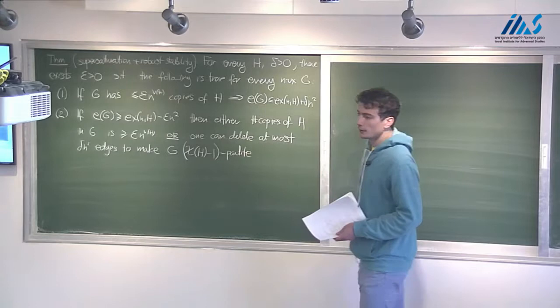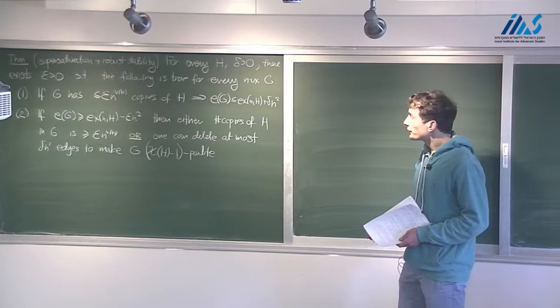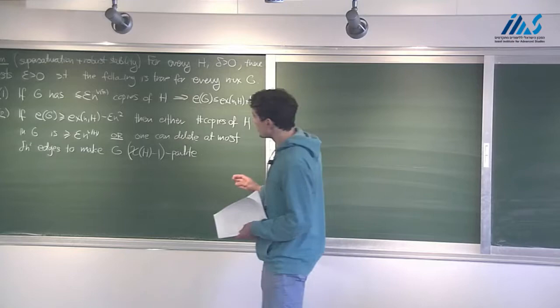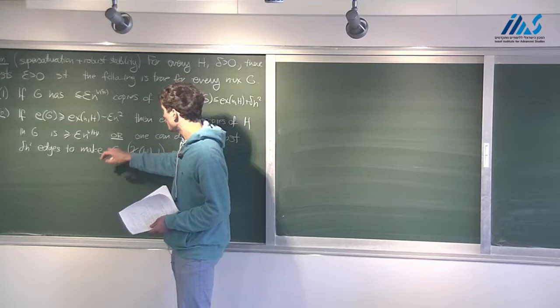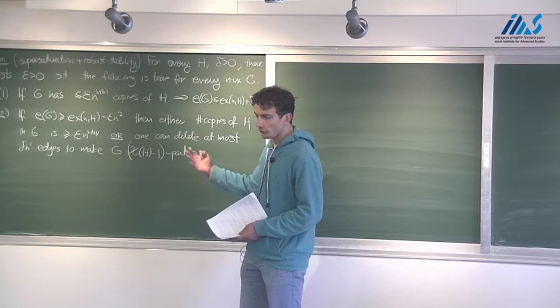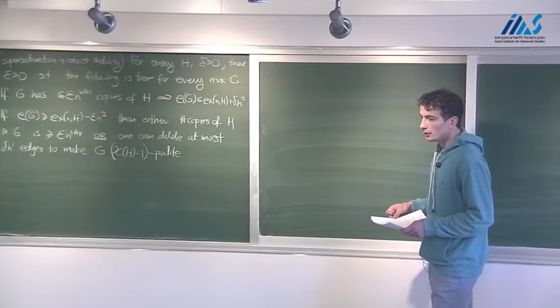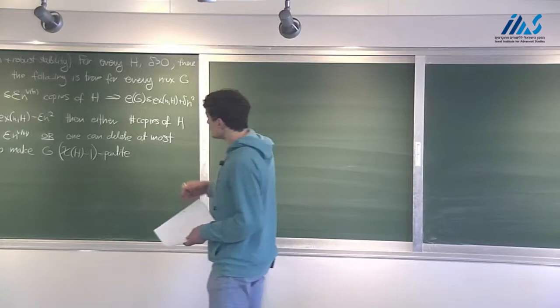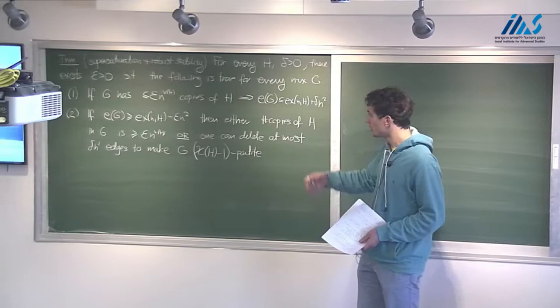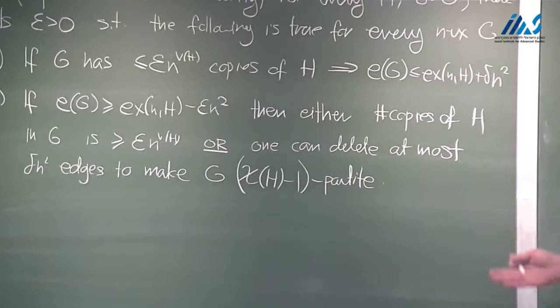Their statement is roughly: if the number of edges of G is the extremal number of H minus T, and in order to make it bipartite you have to delete at least 2T edges, then there is some function of T which tells you how many copies of H there are, and it's optimal up to some absolute constant. Even the proof of Zoltan — if you want to prove stability for an arbitrary graph H, he has a nice argument for the clique, and then for general H he applies the regularity lemma and uses the same argument on the cluster graph, which is a bit of a cheat.